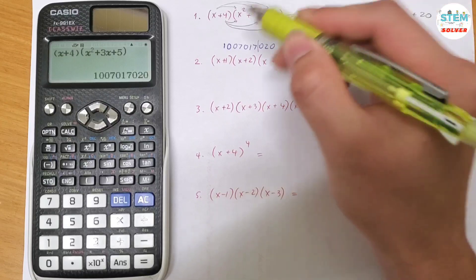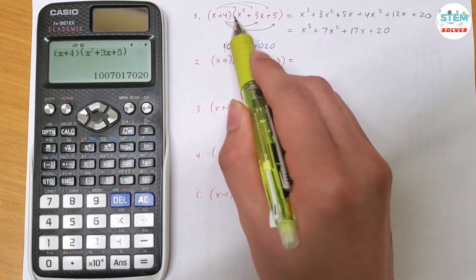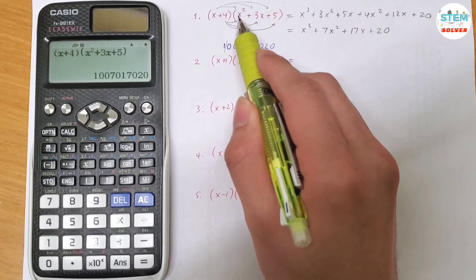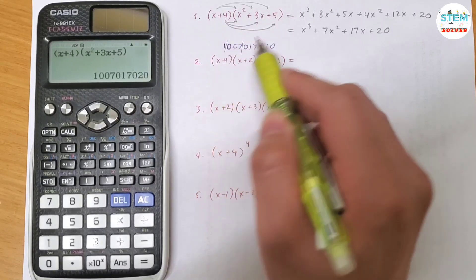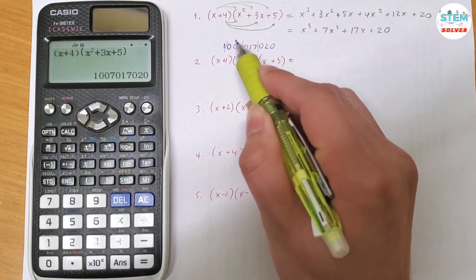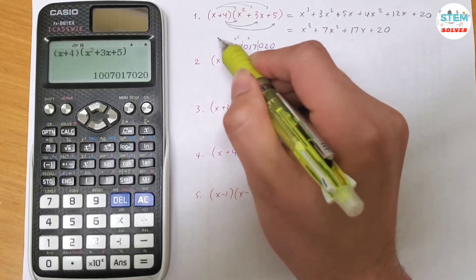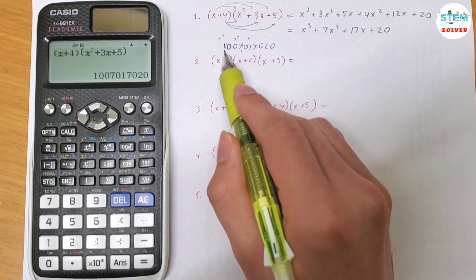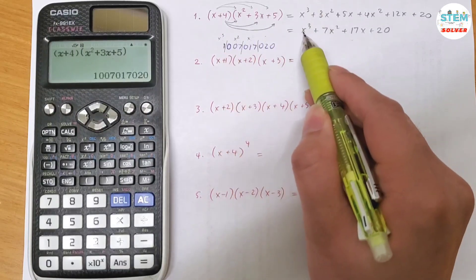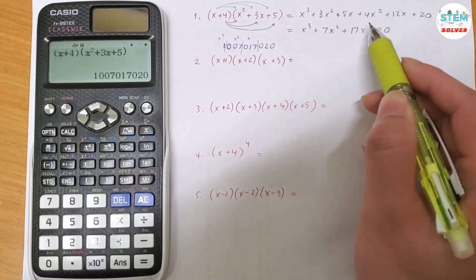Because I gave x the value of 1,000, now let's divide this number into groups of 1,000. When you look at this factor you should recognize this is x cubed — a third-degree polynomial. So the digits represent the coefficients: I have 1 x cubed, plus 7 x squared, plus 17x.